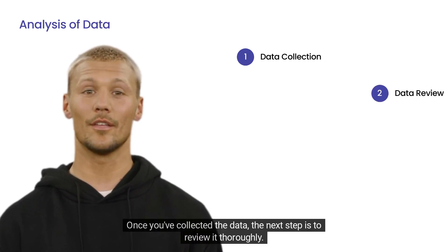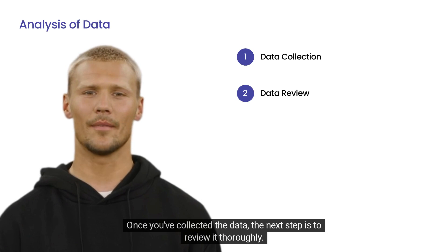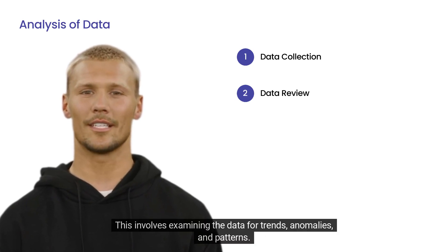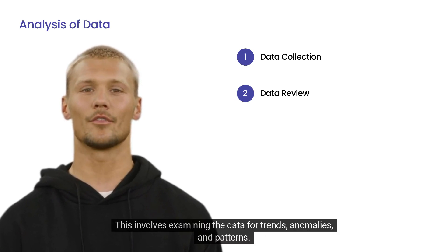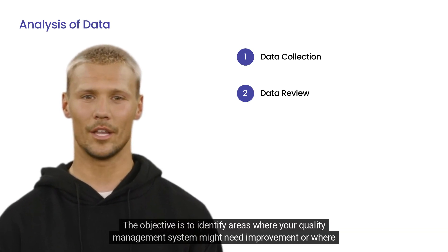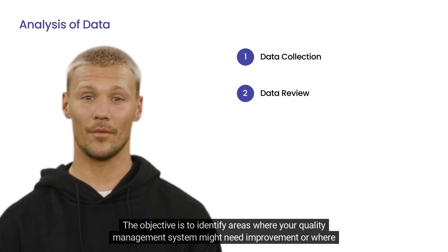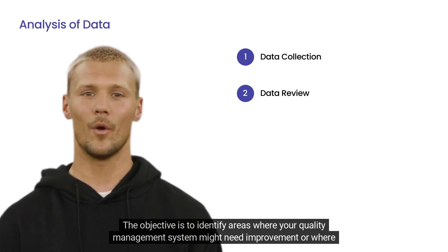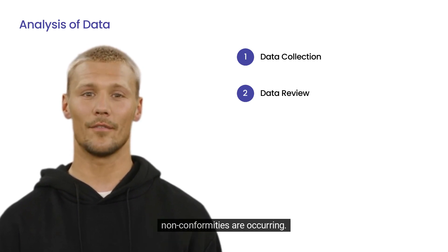Once you've collected the data, the next step is to review it thoroughly. This involves examining the data for trends, anomalies, and patterns. The objective is to identify areas where your quality management system might need improvement or where non-conformities are occurring.